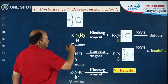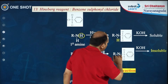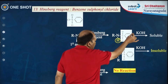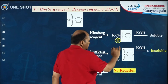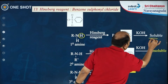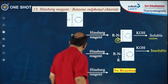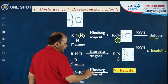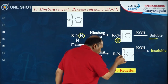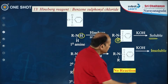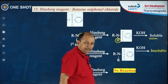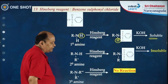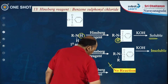When primary amine reacts with Hinsberg reagent, the product contains an N–H hydrogen that is acidic (due to the electron-withdrawing sulfonyl group), so on treatment with base the product is soluble. When secondary amine reacts with Hinsberg reagent, the product has no acidic hydrogens, so it is insoluble in KOH. For tertiary amine, there is no N–H hydrogen for displacement, so there is no reaction.